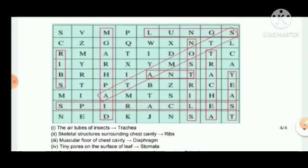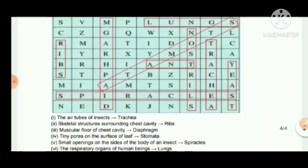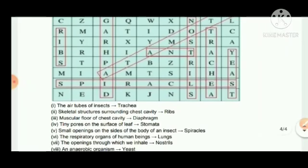You can see the answer of all those terms. The air tubes of insects, trachea. Skeletal structure surrounding chest cavity, it is ribs. Muscular floor of chest cavity, this one is diaphragm. Tiny pores on the surface of leaf, stomata. Small openings on the sides of the body of an insect, spiracles. And the respiratory organ of human beings, this is lungs.